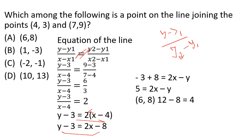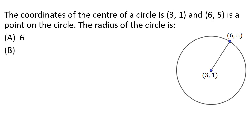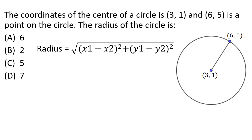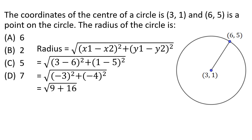The coordinate of the center of the circle is (3,1) and (6,5) is a point on the circle. The radius is the distance: √[(x1-x2)² + (y1-y2)²] = √[(6-3)² + (5-1)²] = √[9 + 16] = √25 = 5. So the radius is 5. Root 5.